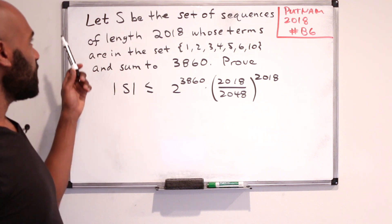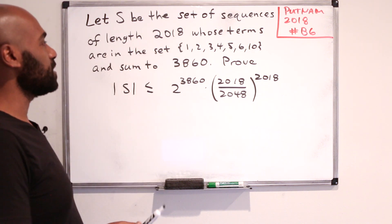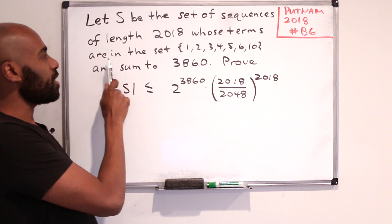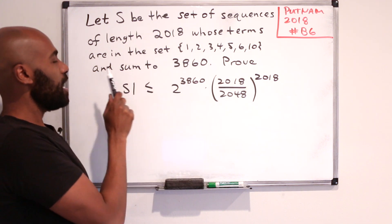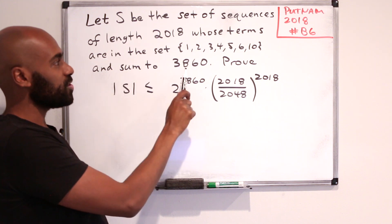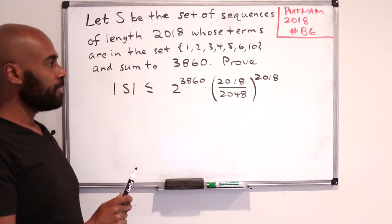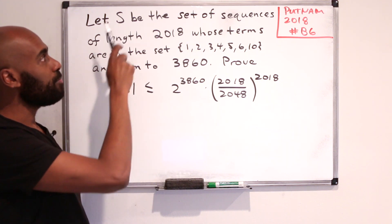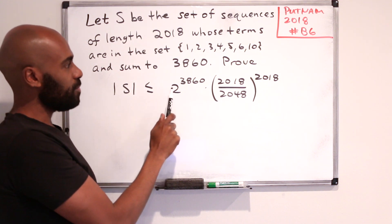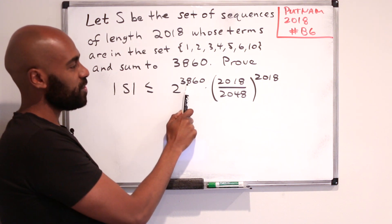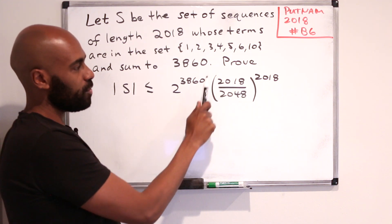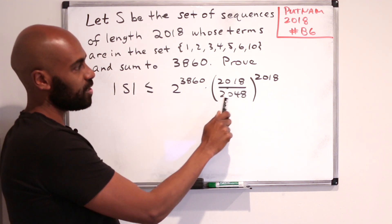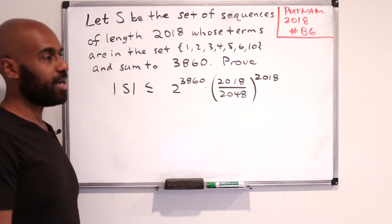So the question says, let S be the set of sequences of length 2018 whose terms are in the set 1, 2, 3, 4, 5, 6, and 10 and whose terms sum to 3860. It says, prove that the number of elements in S is at most 2 to the 3860 times this quantity right over here, which is a number just less than 1 raised to the 2018.